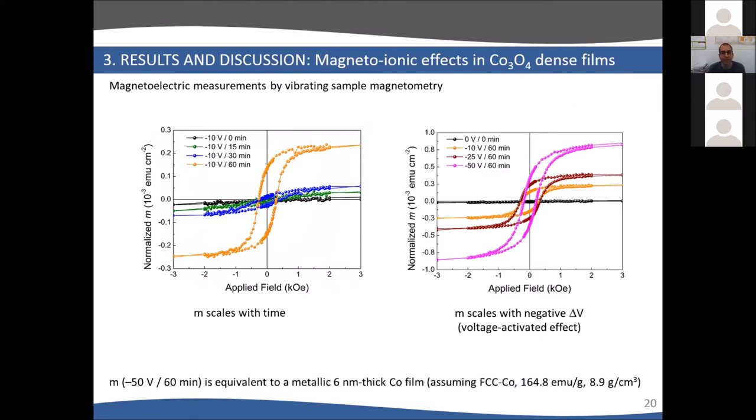You can tune the amount of magnetization by increasing the time, keeping the voltage at minus 10 volts, as you can see on the left. On the right, keeping the time constant, you can get further saturation magnetization by changing the voltage. The maximum we got at minus 50 volts for one hour is equivalent to 6 nanometer thick cobalt layer. Basically, we reduced 6% of this cobalt oxide towards metallic cobalt.